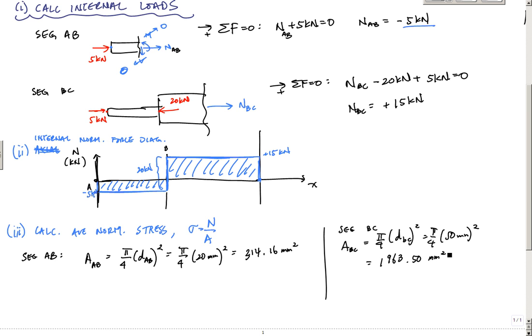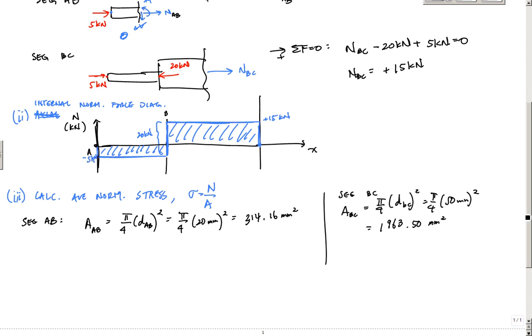And then, to calculate the stress in each, I have sigma AB, the normal stress right here. I have NAB divided by AAB, okay? And here, I put in the negative 5 kilonewtons divided by the 314.16 millimeters squared. And this gives me negative 0.01592 kilonewtons per millimeter squared.